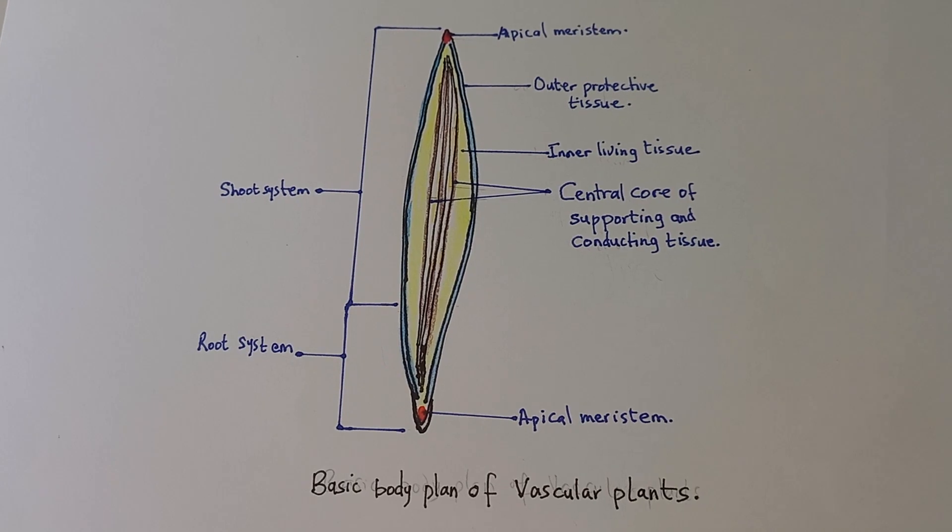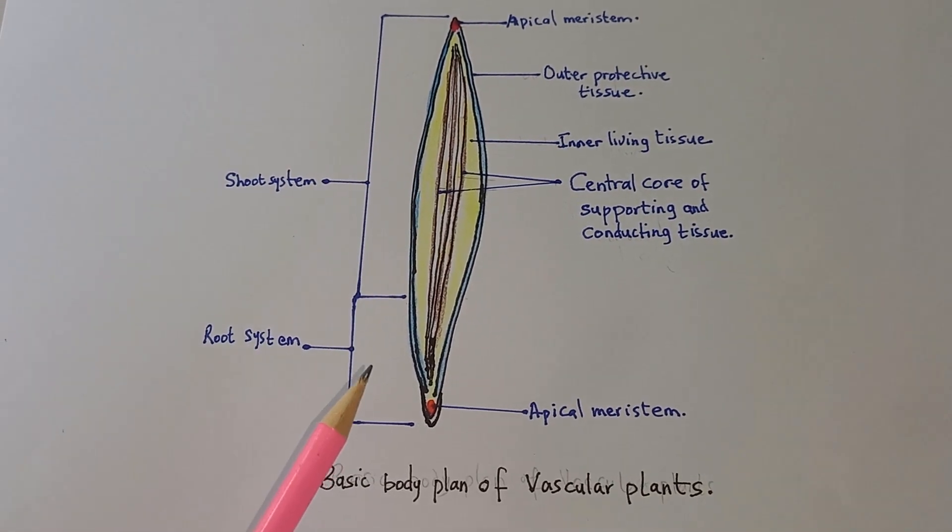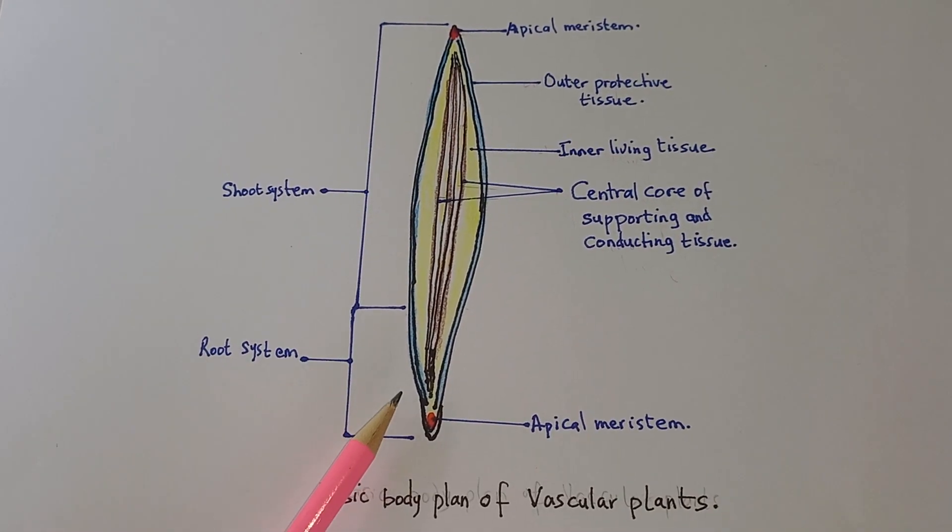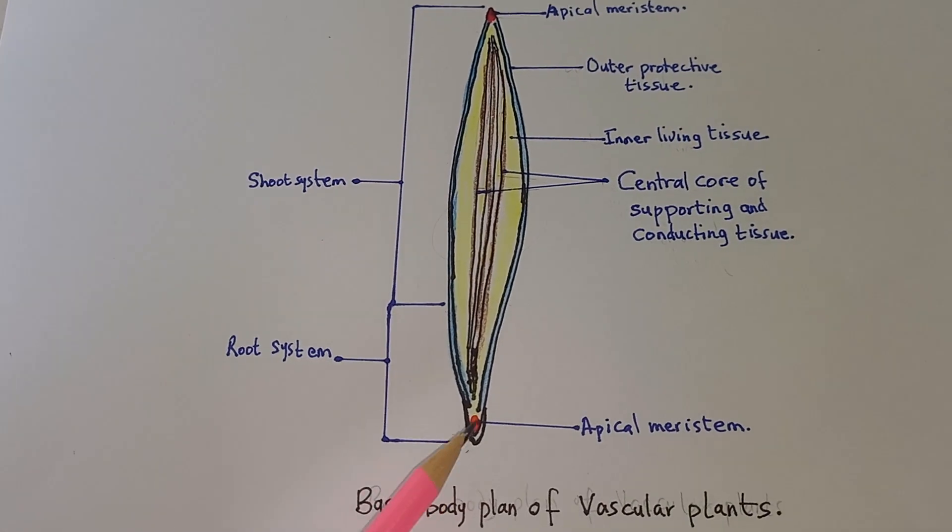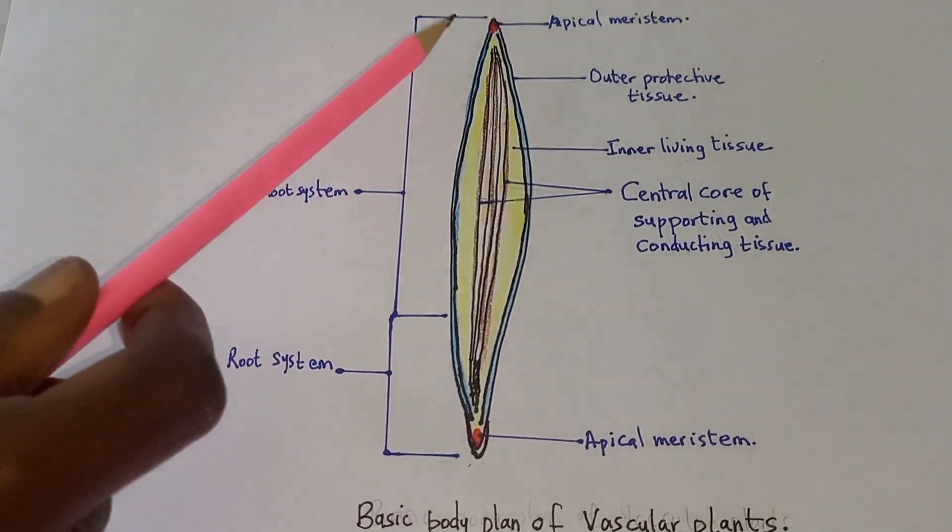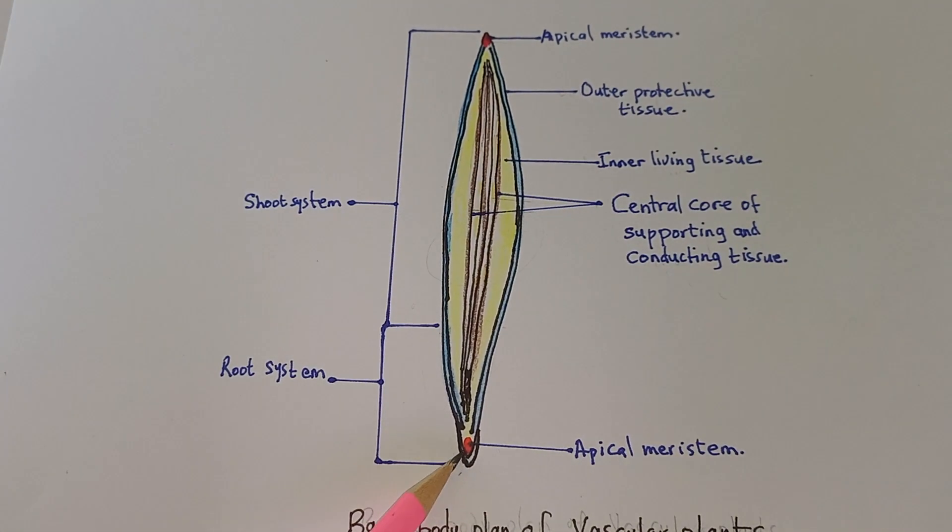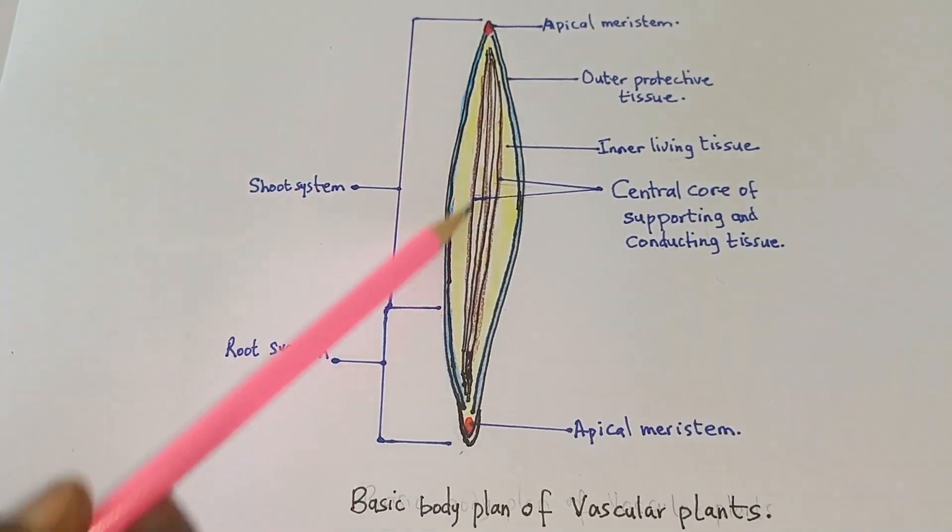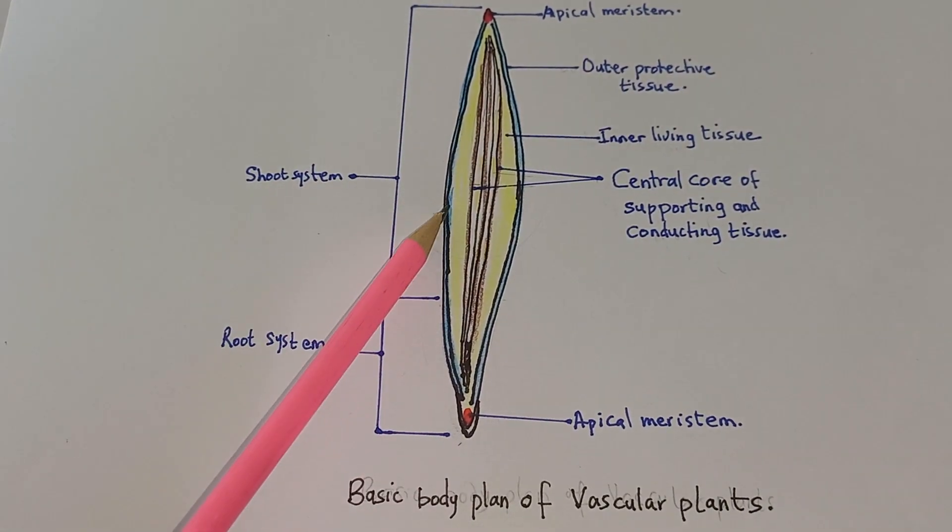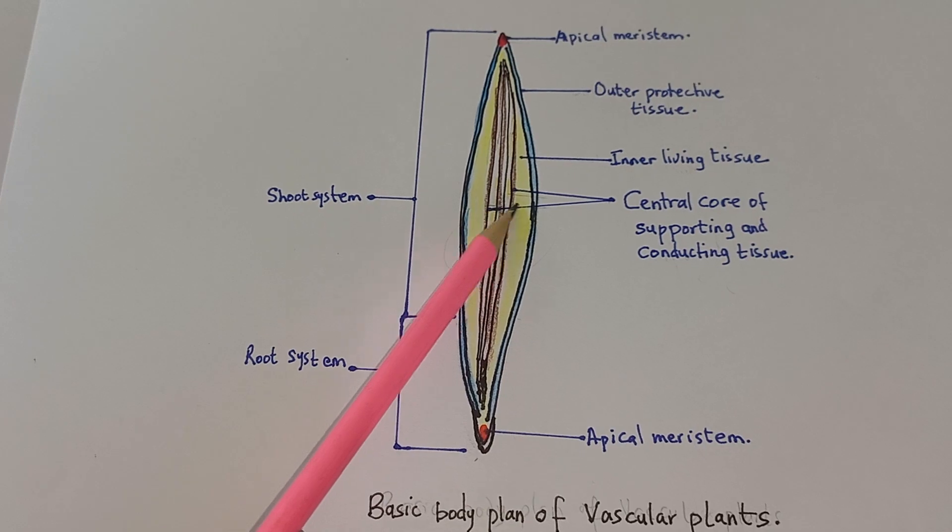All vascular plants have the same basic architecture, with continuously dividing cells at the root tip and at the shoot tip. These are the apical meristem. They use cells to make sure the plant is growing in height and also tissues to build the whole plant.